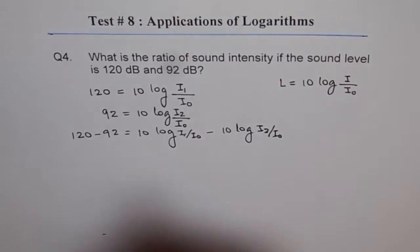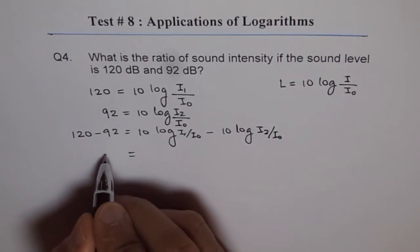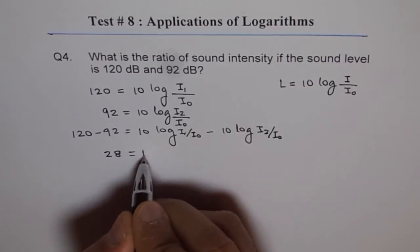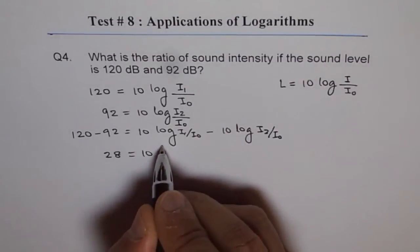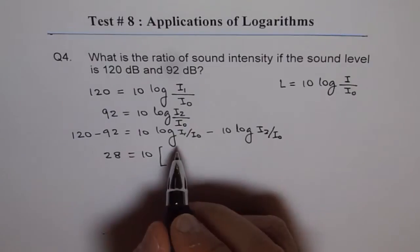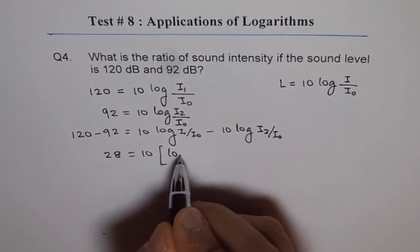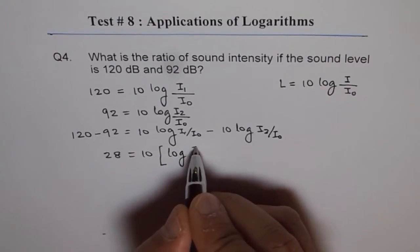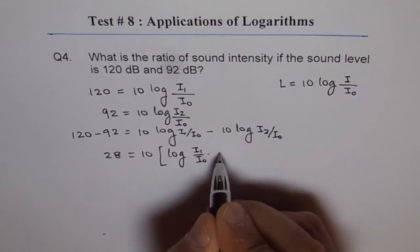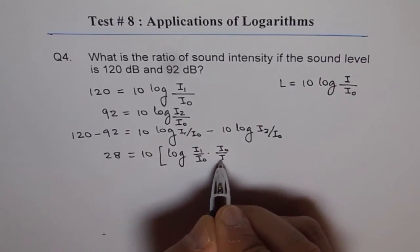Now 120 minus 92 is 28 equals to—we can take 10 log of I1 over I0 times I0 over I2.